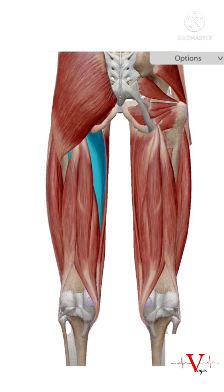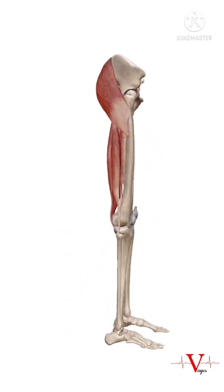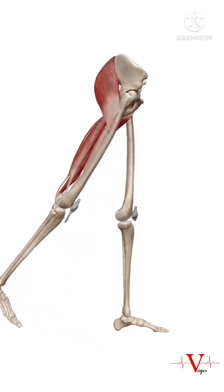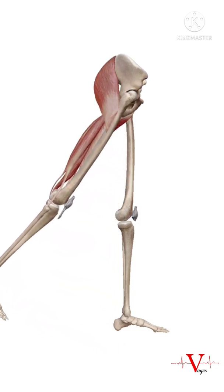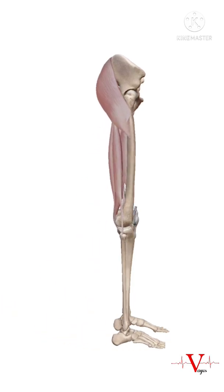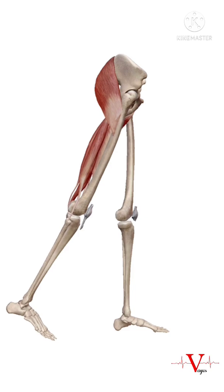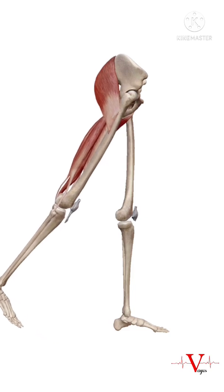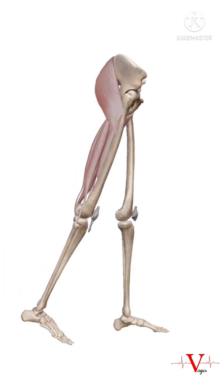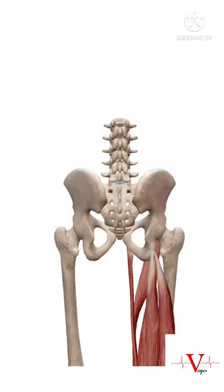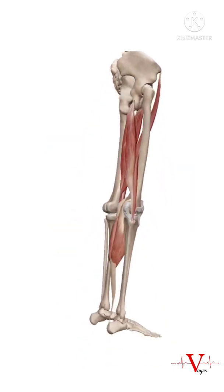One more muscle — this is adductor magnus. Now let's look at the actions of these muscles. All the muscles present in the back of the thigh are collectively known as hamstring muscles. The action of the hamstring muscles is hip extension.